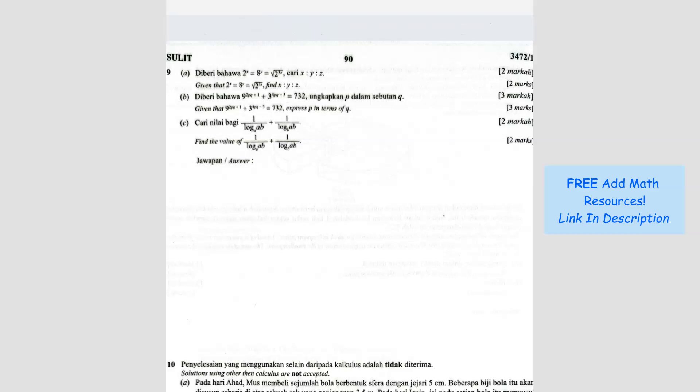Question number 9. Given that 2^x equals 8^y equals square root of 2 to the power of 3z. So this is the question. They're asking us to find the ratio x to y to z.